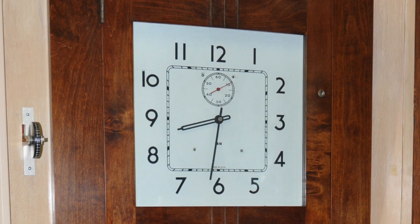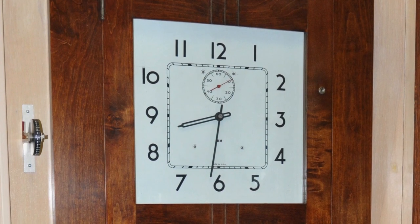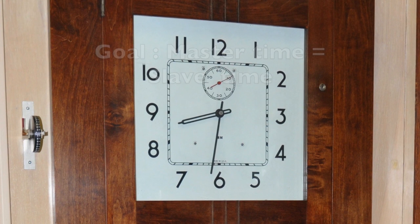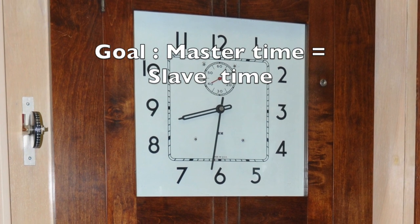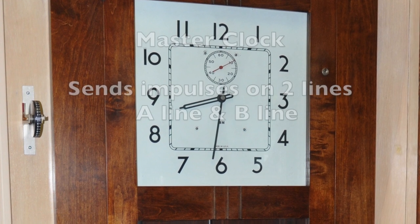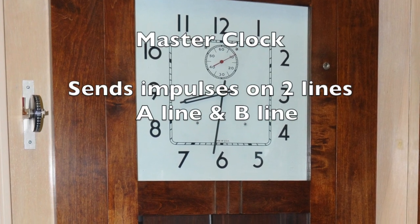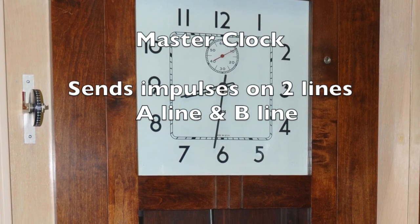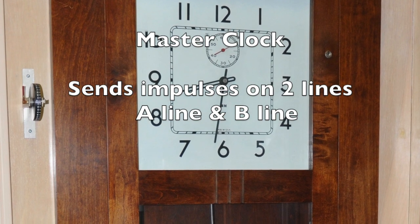Let's start with an overview of the entire IBM master and slave clock correction process. The goal is for the master and the slave to show the exact same time. The master sends minute impulses on two separate lines, the A line or B line.